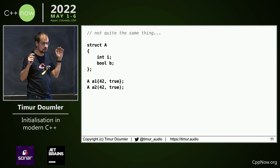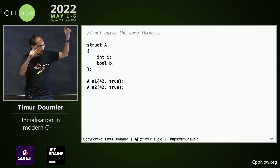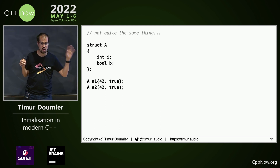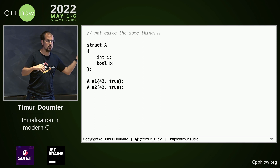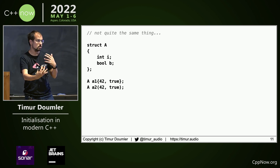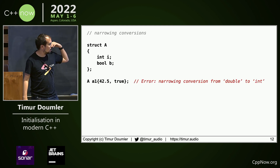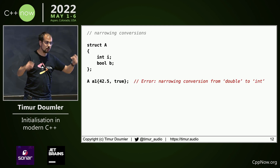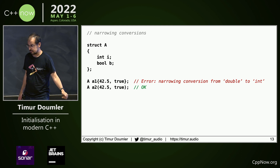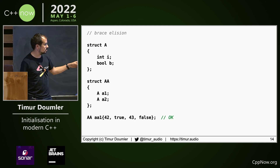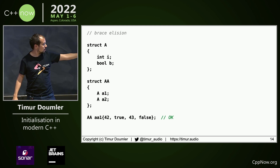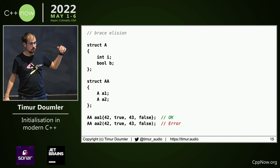Unfortunately, initializing a variable with parens and initializing a variable with curlies is not quite the same thing. Because it's aggregate initialization but it looks like a function call, they made it behave a little bit more like function calls. For example, brace initialization with curlies does not allow narrowing conversions, but aggregate initialization with parens does. On the other hand, brace initialization allows brace elision — so if you have a nested aggregate you can omit the braces — but with parens you cannot.